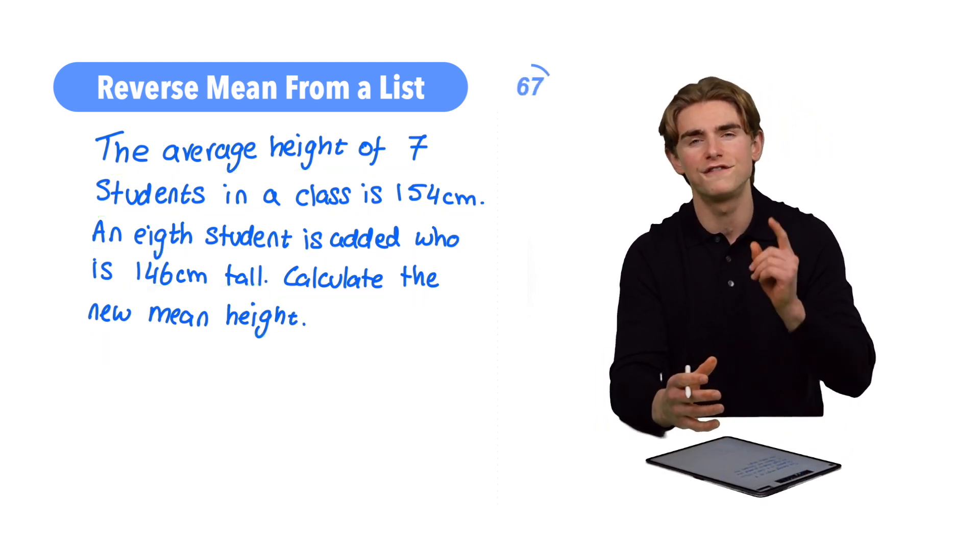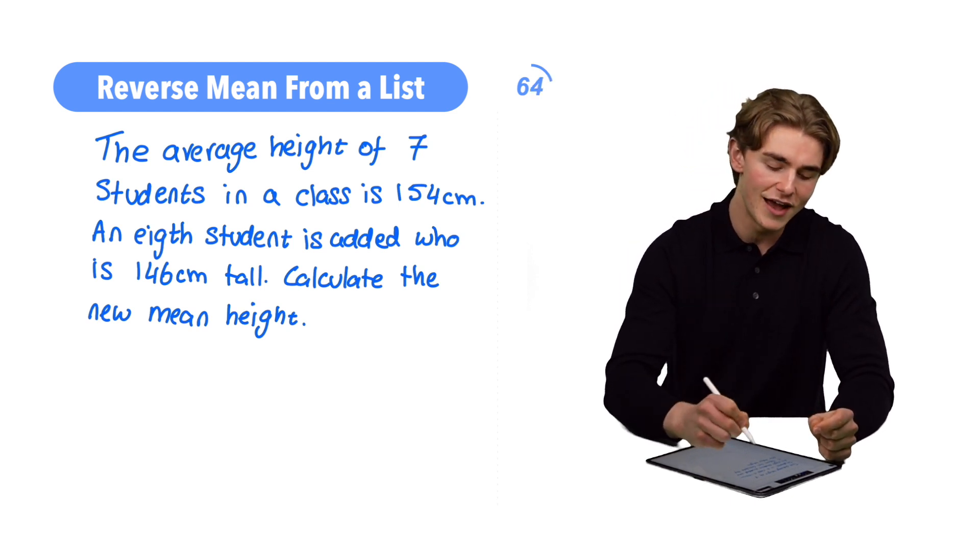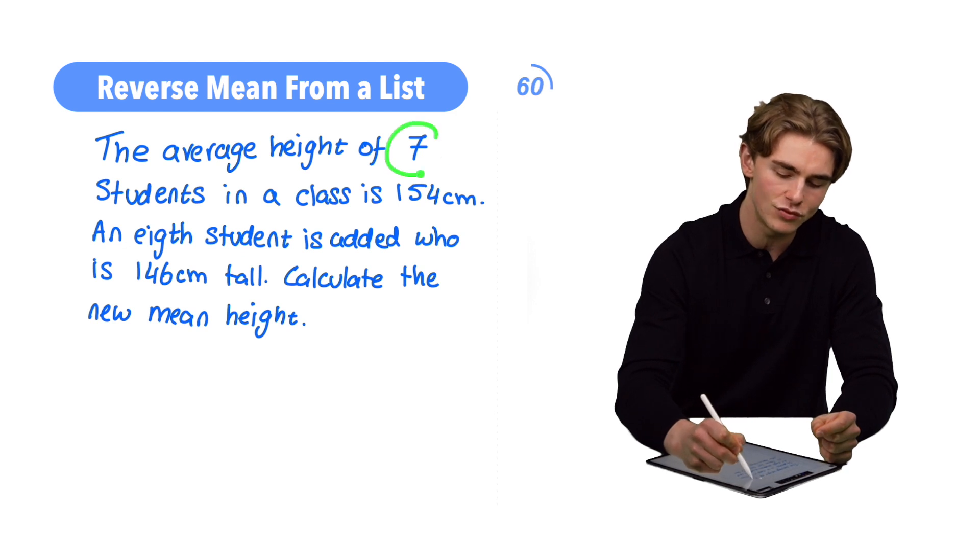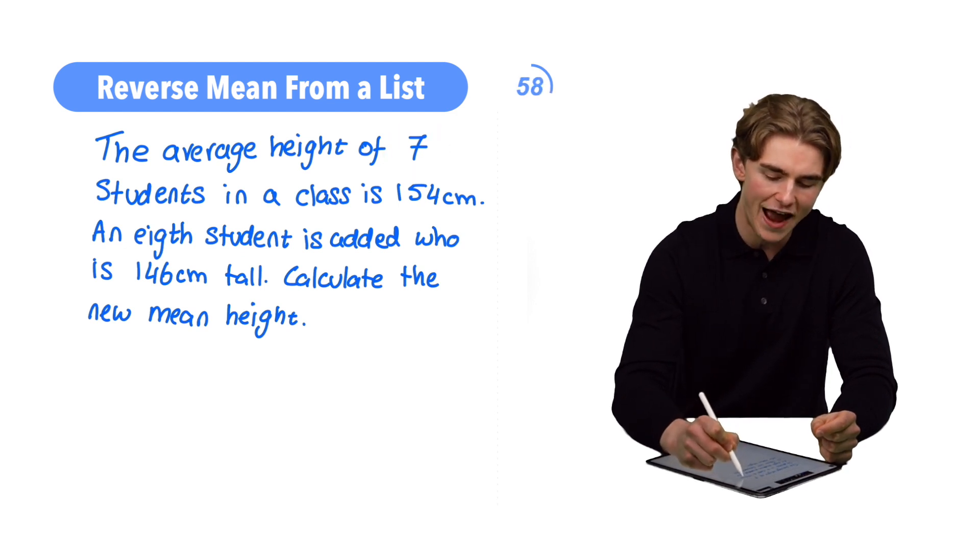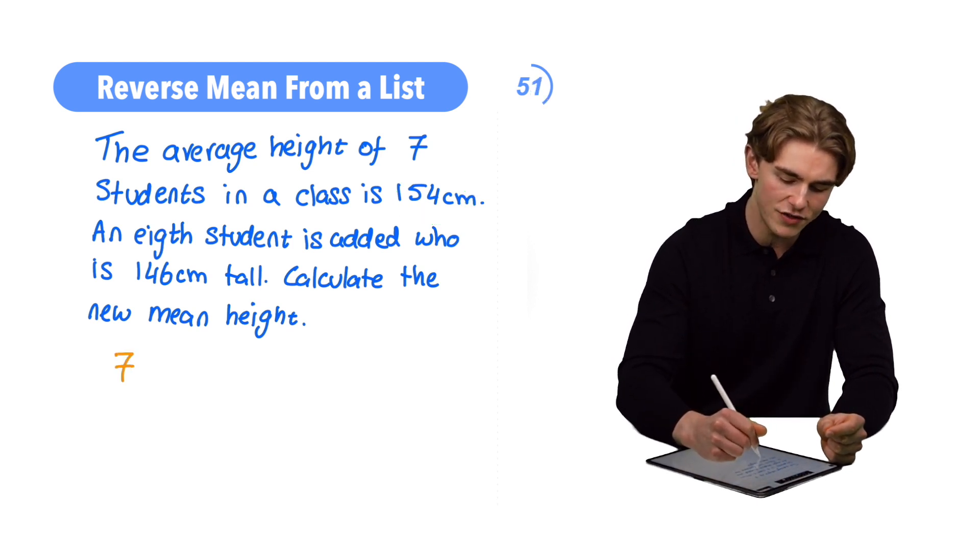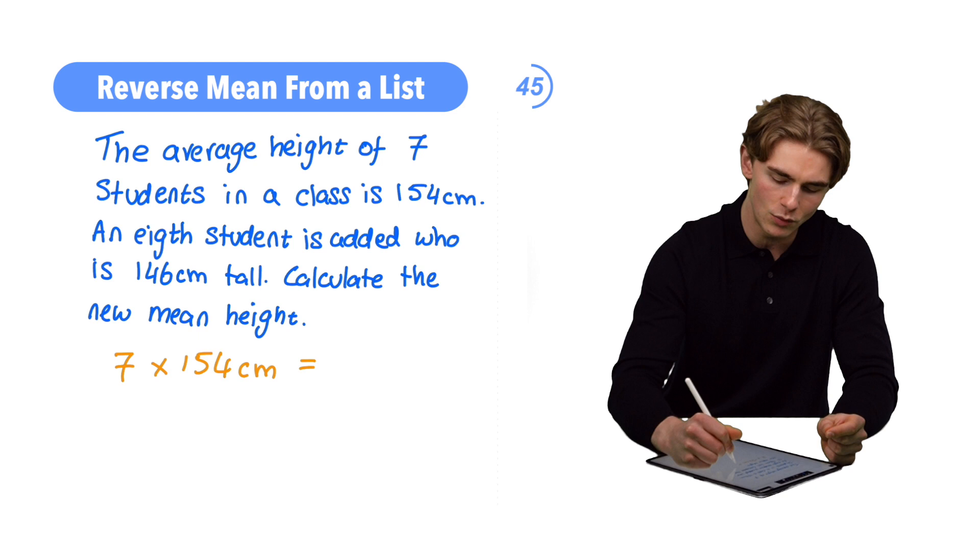Guys, what are we going to do? The first step is going to be to calculate the total height before that new student was added. Now, we know that we have seven students in the class and that the average height of those students is 154 centimeters. So, to find the total height before that new student was added, we can do our seven, the number of students, times by 154 centimeters, the average height. Seven times 154, that's going to be 1078 centimeters.